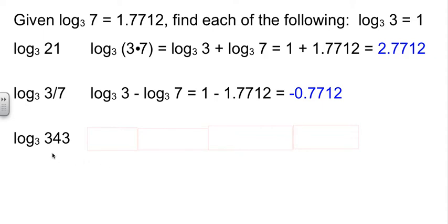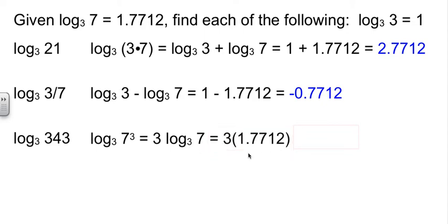One more of these type problems where we're going to have to mess around with this number to turn it into something involving 3s and or 7s. Log base 3 of 343. Well, 343 is 7 to the 3rd power. If you remember back to our cubes list that we had back in Chapter 6, that's one of the numbers that was in our cubes list, is 343. It's the same as 7 to the 3rd. Well, since this has got a power on it, I can drop the power down in front. So I have 3 times log base 3 of 7. Log base 3 of 7, I know the value of. It's 1.7712. 3 times that gives me our final answer of 5.3136.